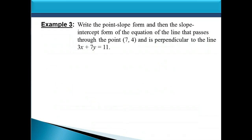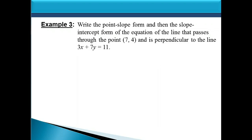Let's look at another different scenario. We want to write the point-slope form and then the slope-intercept form of the equation of the line that passes through the point 7, 4 and is perpendicular to the line 3x plus 7y equals 11. We have a point to use as x1, y1, but we're not given the slope directly. However, we know the line is perpendicular to 3x plus 7y equals 11, and perpendicular lines have slopes that are opposite reciprocals of each other.